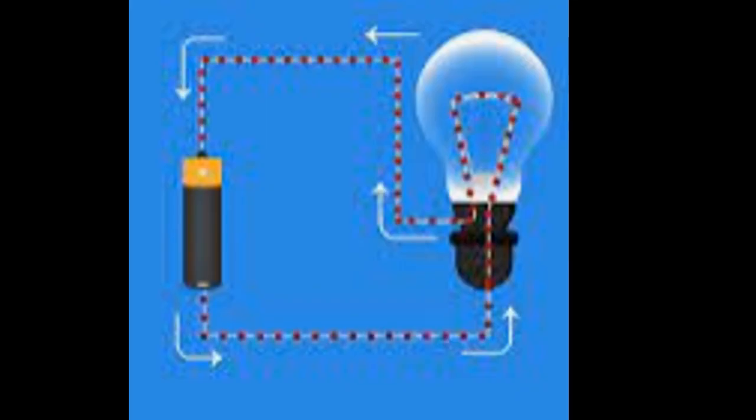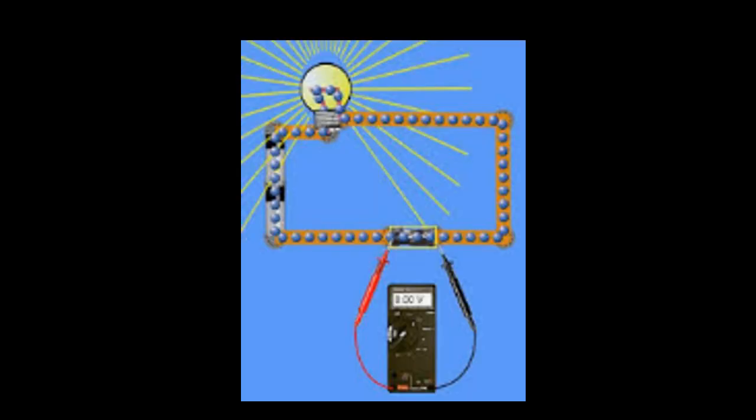To use electricity, we need electrons to flow in the same direction around the circuit. The common symbol for current is the uppercase letter I. The standard unit is the ampere symbolized by A.